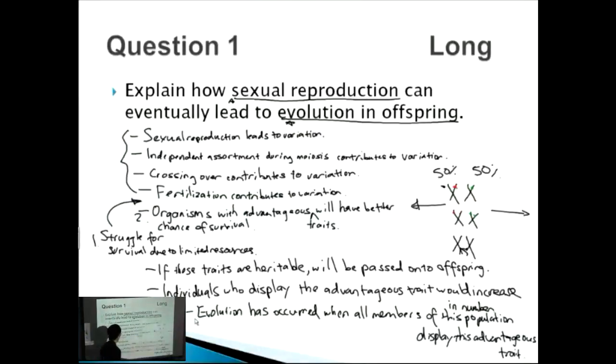So if we count up the number of marks, remember that we wanted about 50 percent of the marks to be in regards to sexual reproduction and the other 50 percent due to evolution. We had about one, two, three, four marks here for sexual reproduction. And then down here we had one - well actually one here in regards to the struggle for survival, this is also known as natural selection.